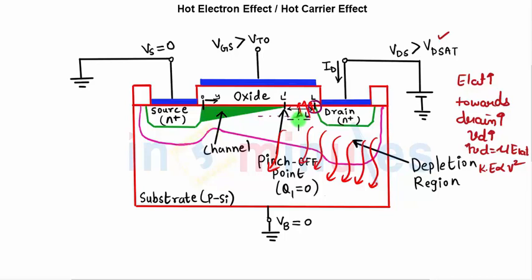Because of the high E_vertical, many electrons move toward the gate oxide. However, some electrons get trapped in the oxide layer. This trapped-charge concept is actually used in flash memories and EEPROMs.